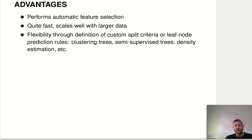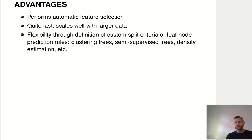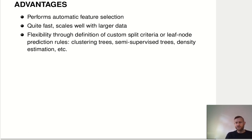Another very important aspect of trees is that they do automatic feature selection. Consider a dataset where you have a hundred features but only five of them actually matter. The tree will do the split optimization and figure out that only those five features are relevant for building the tree. The other 95 features just get ignored, because every time the tree does a split it uses only the optimal one, tending to completely ignore any noise features that don't have information about the distribution of the target variable.